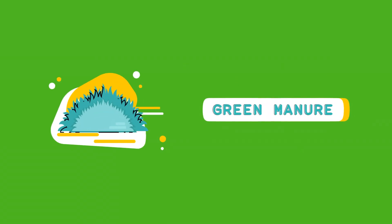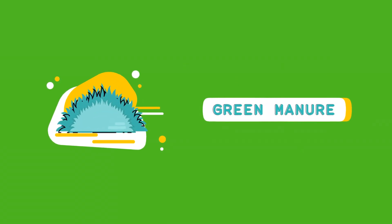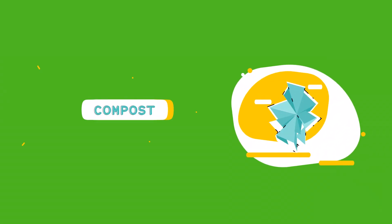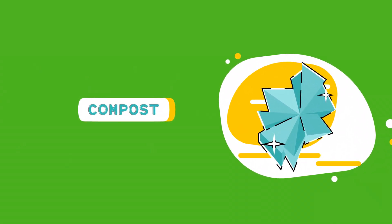Green manure refers to crops grown specifically to be plowed back into the soil. Compost is a mixture of decomposed organic matter.